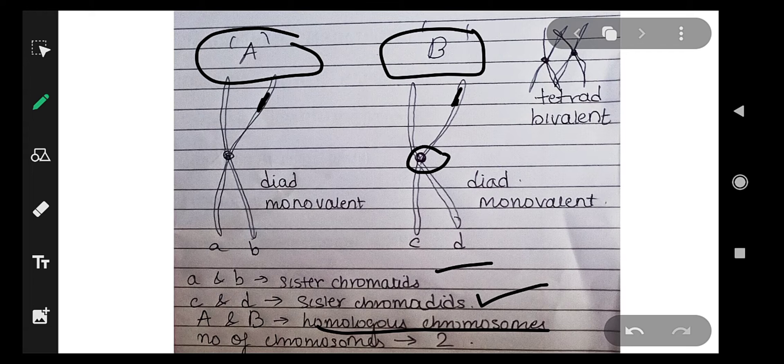Recombination happens in the pachytene phase. This pachytene occurs in meiosis only. This is an example of pachytene where the two homologous chromosomes are undergoing recombination—they exchange genes there.